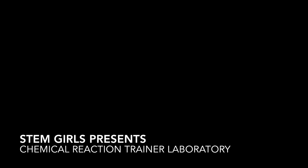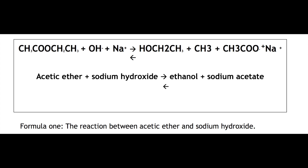So without further ado, let's get straight into it. Within this experiment, what we're going to do is find out the liquid phase saponification of sodium hydroxide with an ether. Basically what this means is the alkaline hydrolysis of a fatty acid ester. This reaction consists of an ethyl acetate with sodium hydroxide, which turns into ethanol and sodium acetate, as the ether molecules disintegrate and are split into an acetate ion and an ethanol molecule.